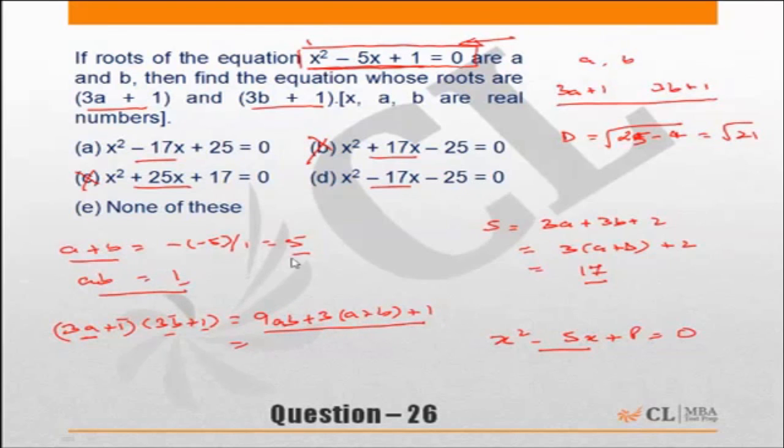So this product of roots will effectively become this expression. Now we know ab is 1, so substitute ab as 1 and a plus b as 5 in this. So this becomes 9 plus 3 into 5 plus 1. 15 plus 10 is 25. So the product of roots has to be 25.